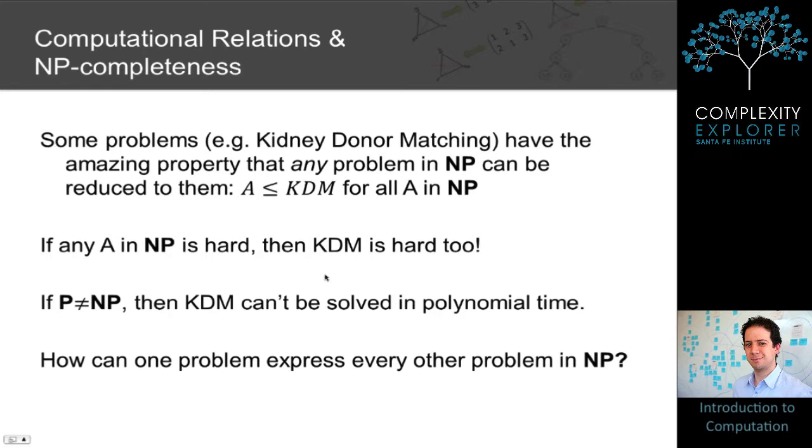We've already mentioned briefly that some problems, like kidney donor matching, have the amazing property that they're as hard as any problem in NP. In other words, for any problem A in NP, solving A can be reduced to solving kidney donor matching.